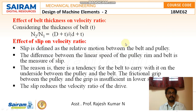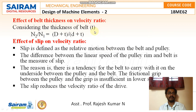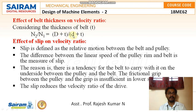The effect of belt thickness on velocity ratio: the velocity ratio is n2/n1 = D/d = ω2/ω1. If the thickness t is mentioned, we add the thickness along with the diameter. So n2/n1 becomes (D + t)/(d + t).